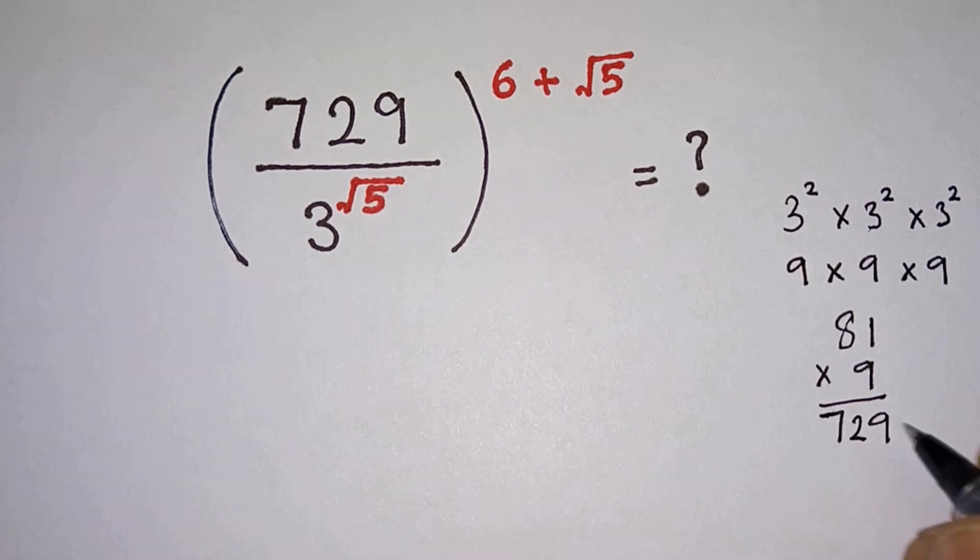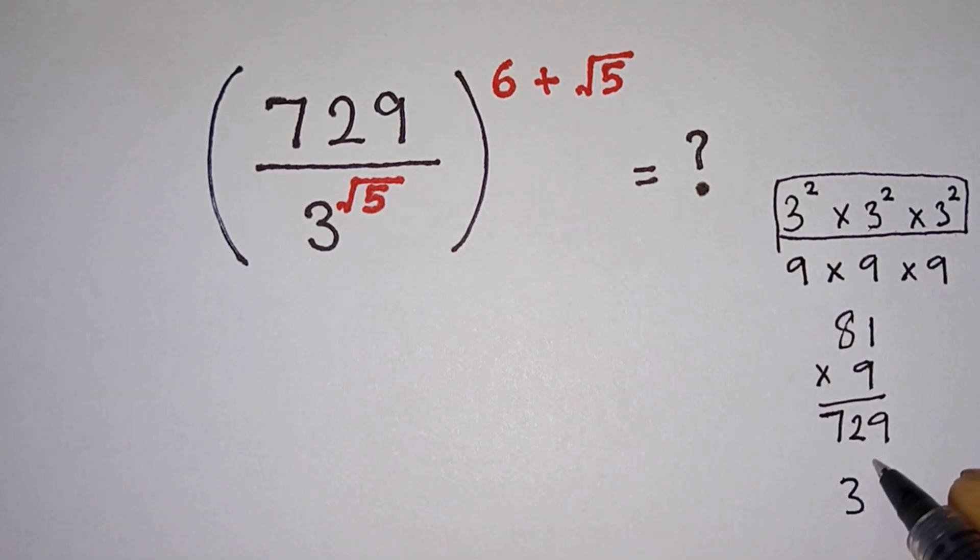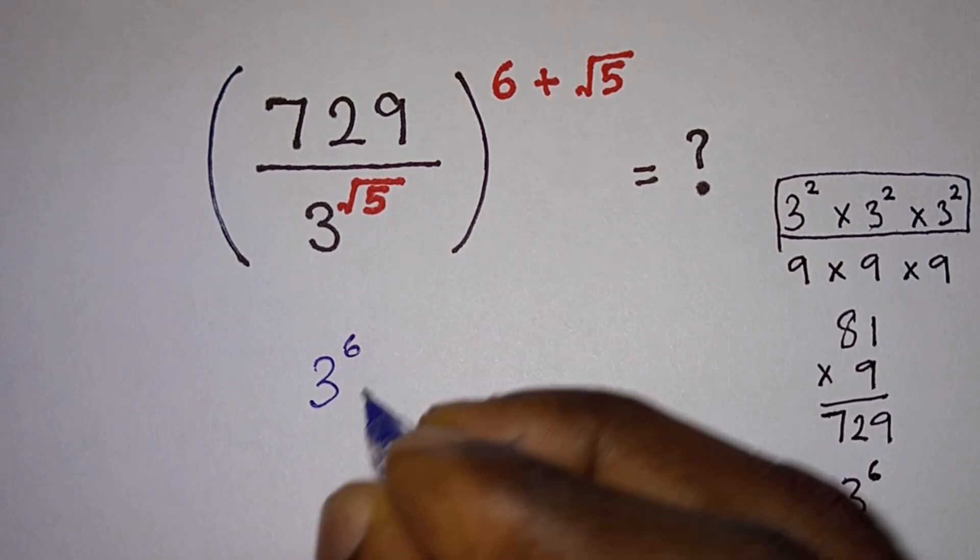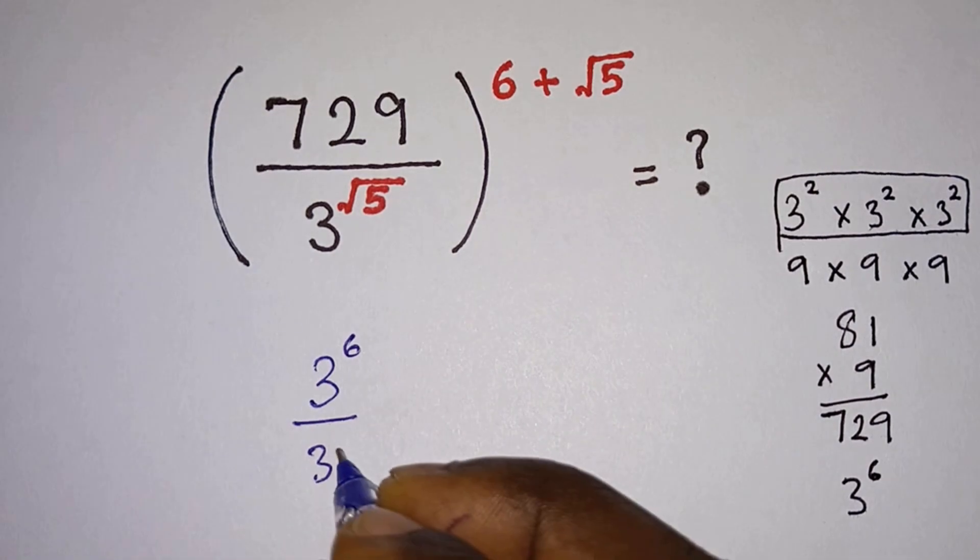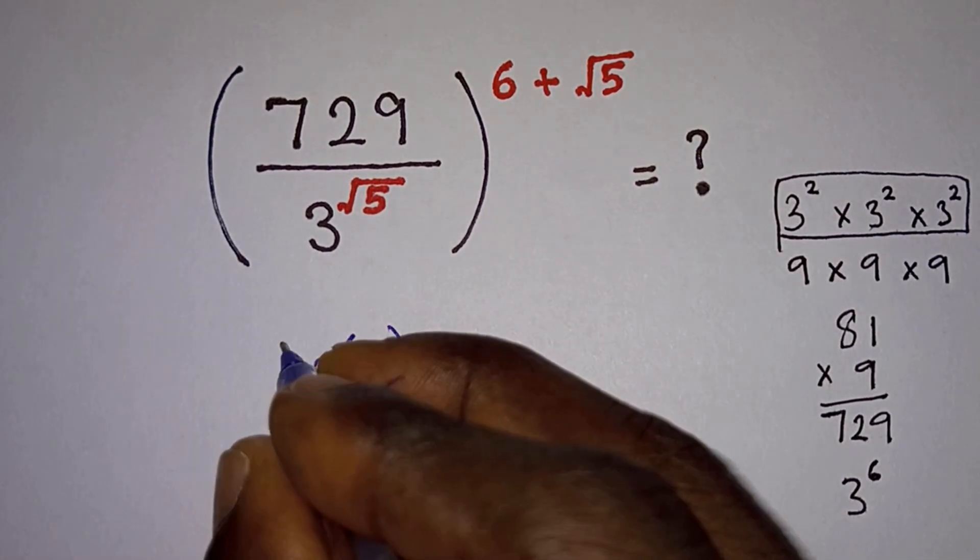So from here it means that we can write 729 as 3 to the power 6. So the problem now becomes 3 to the power 6 divided by 3 to the power square root of 5, or to the power 6 plus square root of 5.